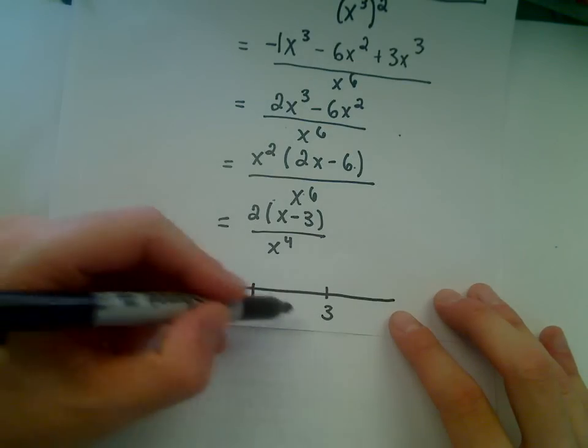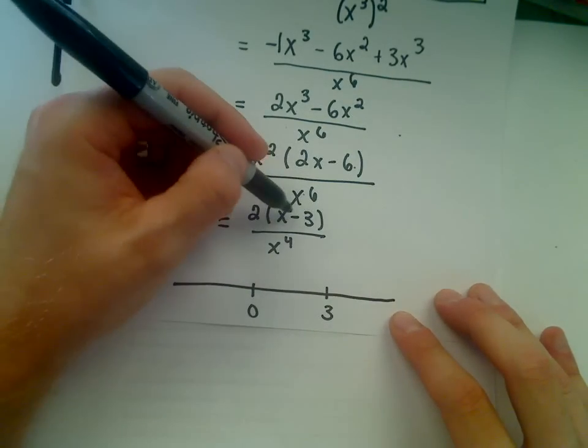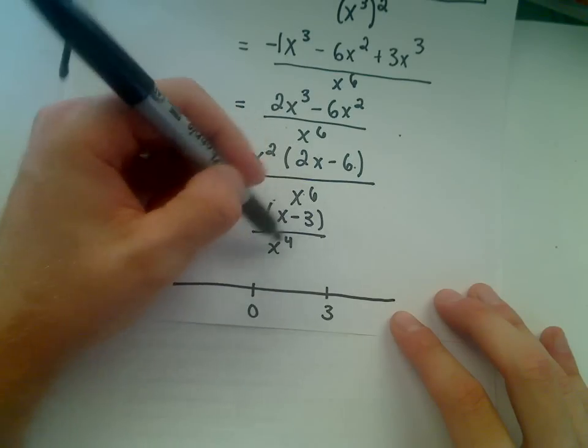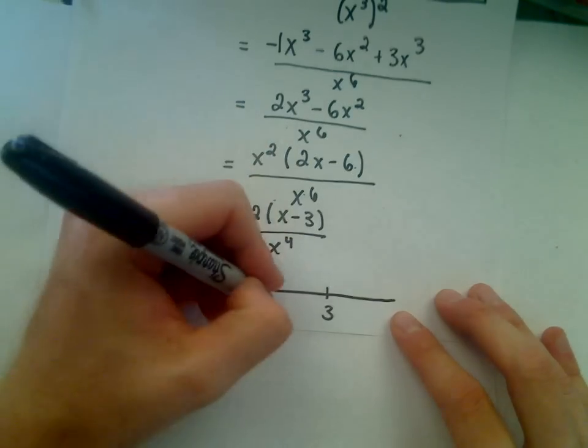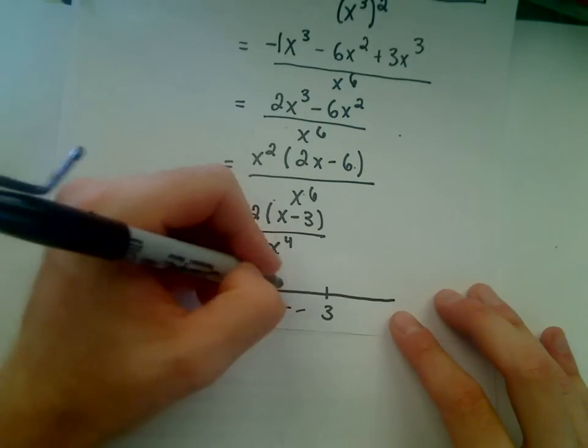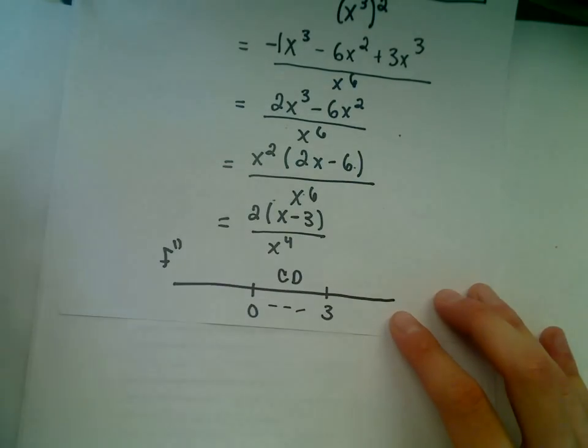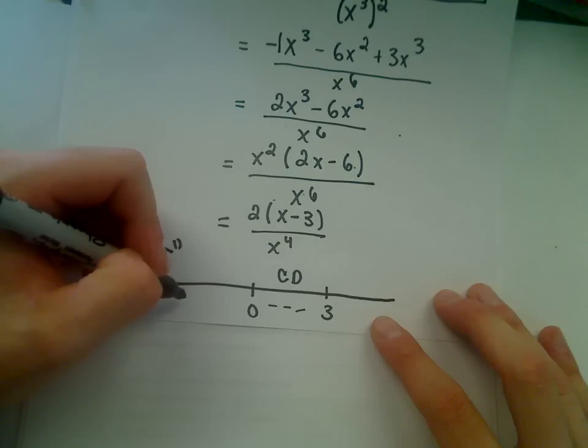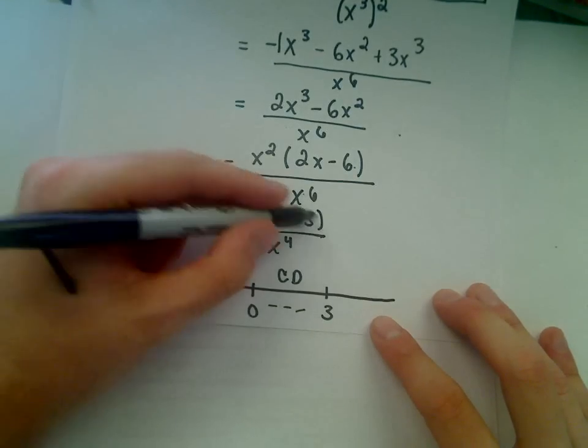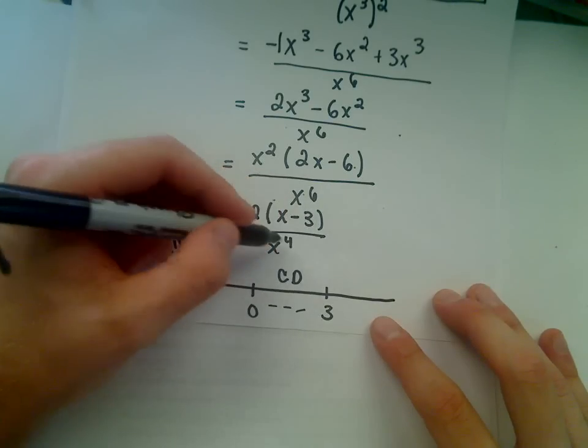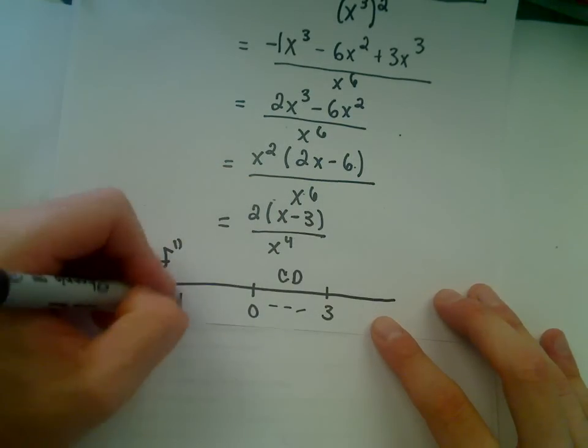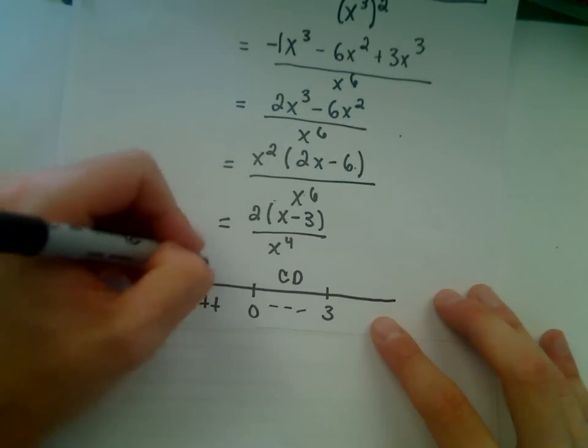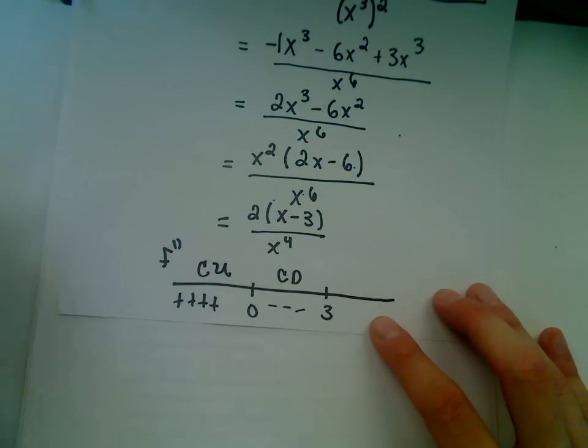Notice if we take a number between 0 and 3, maybe we can use 1. It looks like the numerator is going to be negative. The denominator is going to be positive. So the sign is negative, and that means it's concave down on that interval. If we take a number, say smaller than 0, say negative 1, it looks like the numerator is going to be positive. The denominator will be positive. The sign is positive. That means the graph is going to be concave up on that interval.